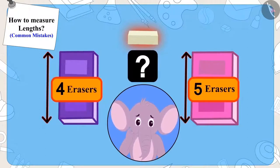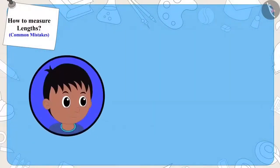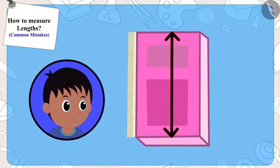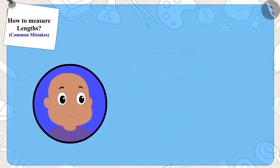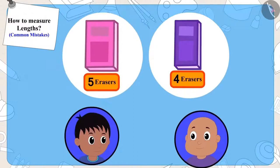Children, can you tell me why and how did this happen? Raju had measured his notebook placing the eraser straight. But while measuring his notebook, Bablu placed the eraser a little above the bottom end. That is why the length of his notebook was four erasers long instead of five erasers long.